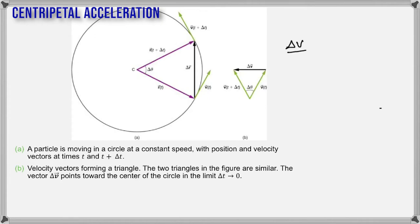Whenever an object moves in a circular path with constant speed, it has an acceleration, and this acceleration is always towards the center. Therefore, this acceleration is called the centripetal acceleration — C-E-N-T-R-I-P-E-T-A-L. We are going to find its value using similar triangles.